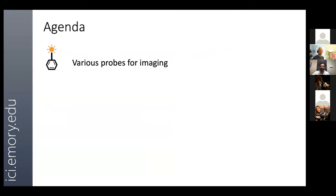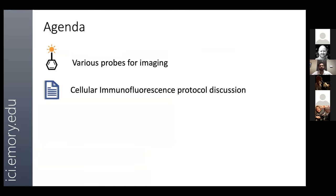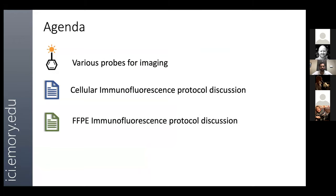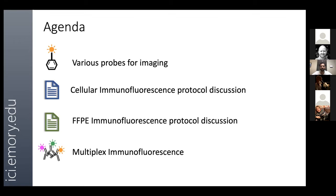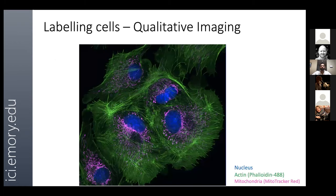Today's agenda is discussing various probes for imaging — chemical probes, fluorescent proteins, and mainly immunofluorescence. I'll be spending the bulk of my time discussing protocols for cellular immunofluorescence and formalin-fixed paraffin-embedded (FFPE) immunofluorescence, going in depth based on protocols I've used in my own research. I'll also give a technical overview of where multiplex immunofluorescence is at the moment, along with tips and tricks throughout.